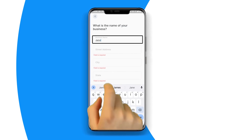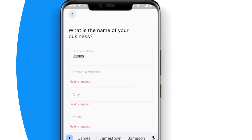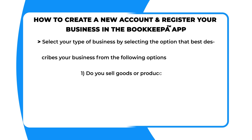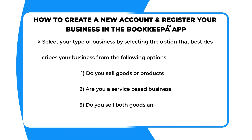Next, click Get Started to set up your business in the bookkeeper app. Enter your business details, then select your type of business by selecting the option that best describes your business: one, do you sell goods or products; two, are you a service-based business; or three, do you sell both goods and services.